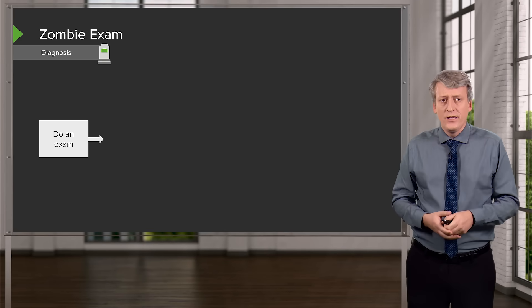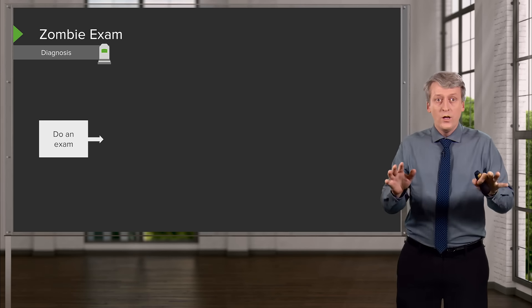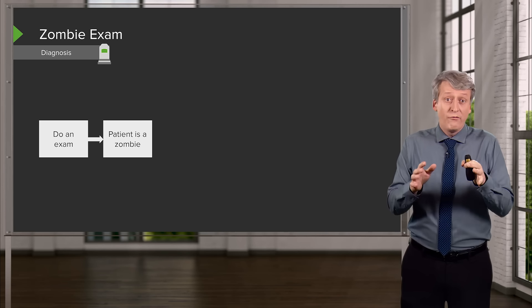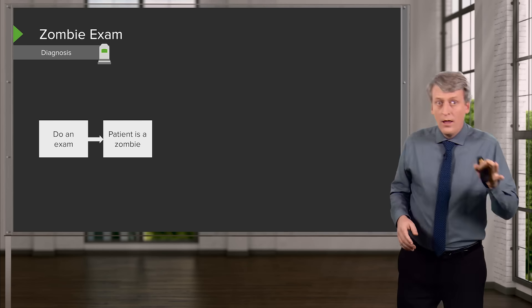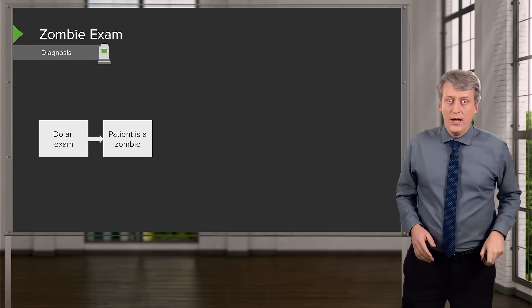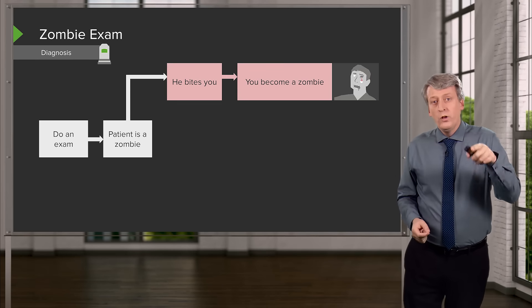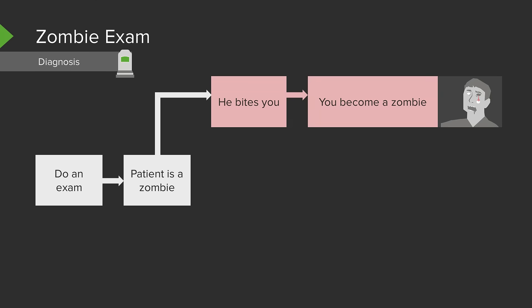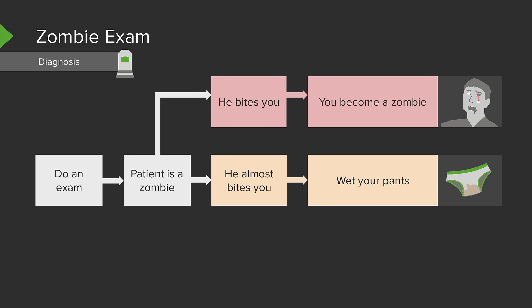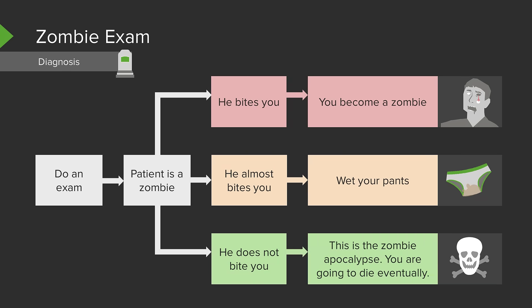So, let's walk through the zombie exam. The way you do a zombie exam is, first, you have to think that maybe the patient is a zombie. Then, you do your exam. There are three possibilities during this exam. The first possibility is he bites you — if he bites you, you will now become a zombie. Another possibility is he almost bites you — if he almost bites you, you will wet your pants. The third option is that he does not bite you. In this case, this is the zombie apocalypse and you are going to die eventually.